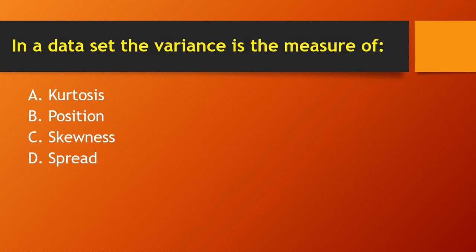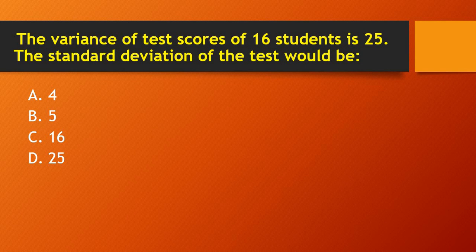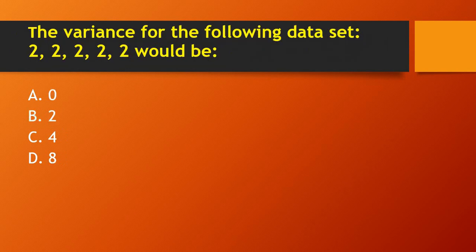Next question: the variance of test scores of 16 students is 25. The standard deviation of the test would be — 4, 5, 16, or 25? Since the variance is 25, taking the square root of 25 gives 5. So the standard deviation of the test is 5.